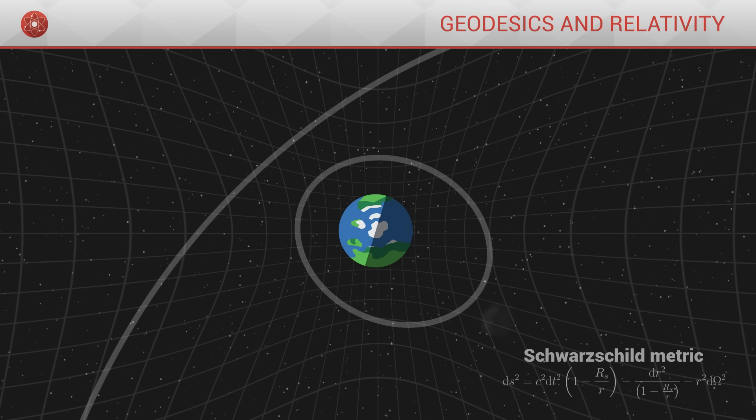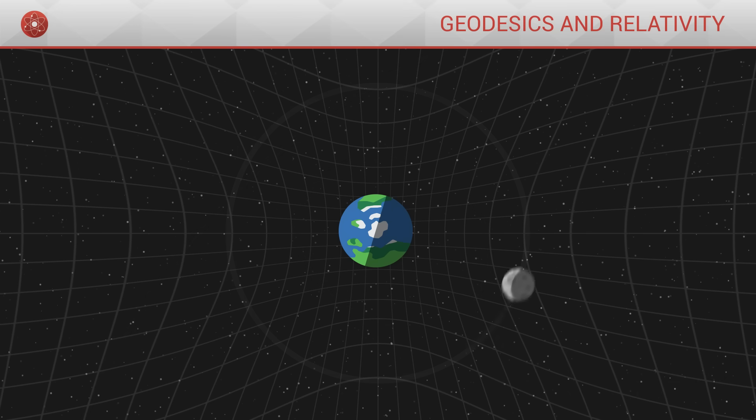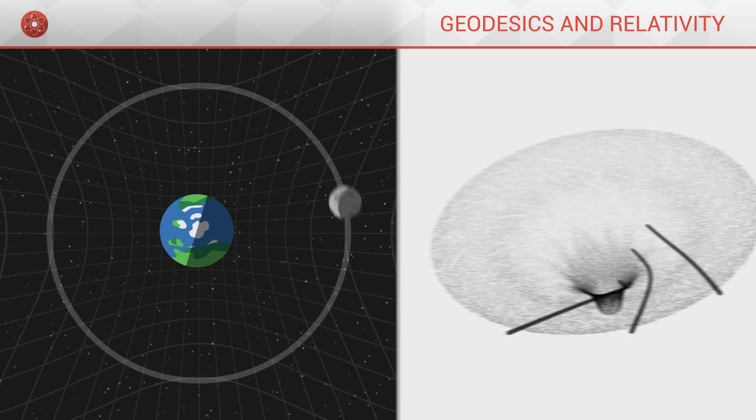If the moon revolves around the Earth, it is because it follows a straight line, a geodesic, but within a curved geometry. Somewhat like the funnel we saw before.